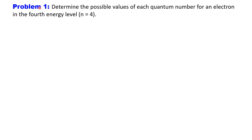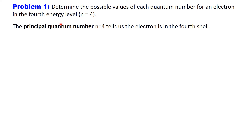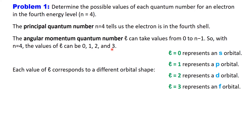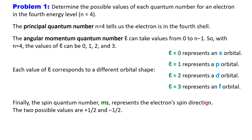Let's tackle our first problem. We need to find all possible values of each quantum number for an electron in the fourth energy level, where n=4. The principal quantum number n tells us the electron is in the fourth shell. For l, the possible values range from zero up to n minus one, so with n=4, l can be 0, 1, 2, or 3 — corresponding to s, p, d, and f orbitals respectively. The spin quantum number ms has two possible values: plus one-half and minus one-half.